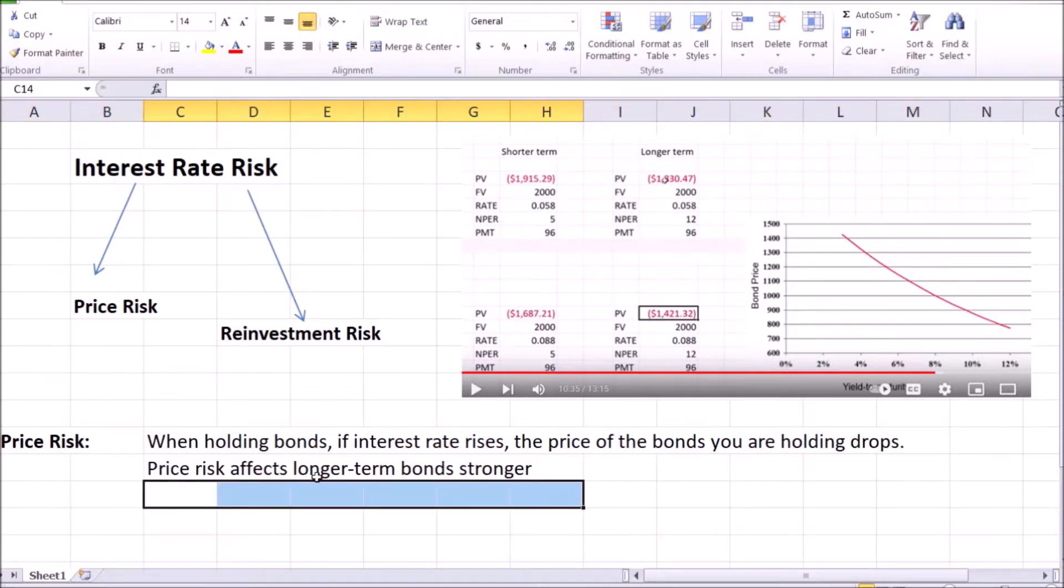As you learned from several examples in the previous video last week, you know that price risk—the changes in prices due to changes in interest rates—affects longer-term bonds stronger than it does shorter-term bonds.